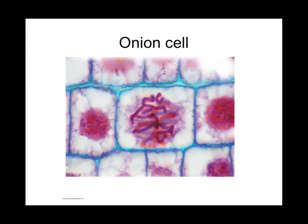Here is an onion cell, which is a plant. This picture looks pretty much like what you're going to be seeing in lab. They dye the onion so that you can see the chromosomes — the chromosomes are the dark, coiled, almost like worms that you're seeing there. That cell right in the middle is in a certain phase of mitosis, where it's going to split into two daughter cells.